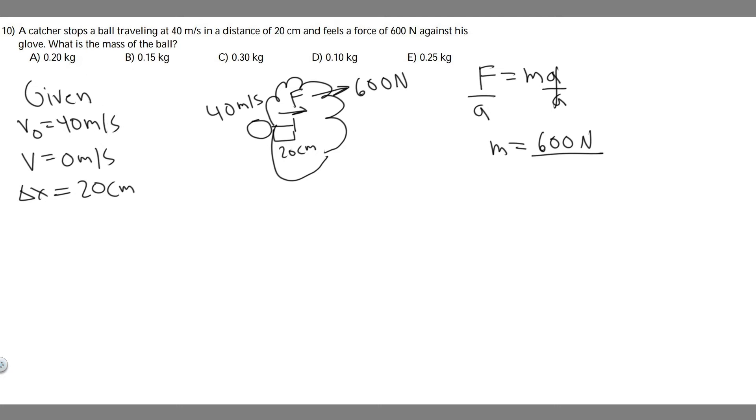We know we have this ball initially traveling at 40 meters per second. It's going to travel a distance of 20 centimeters and then stop. The initial velocity is 40, so v sub 0. The distance it travels is 20 centimeters in this interval, and then at the end it's going to be 0 because the glove stops it.